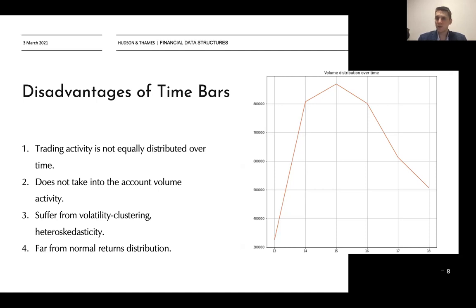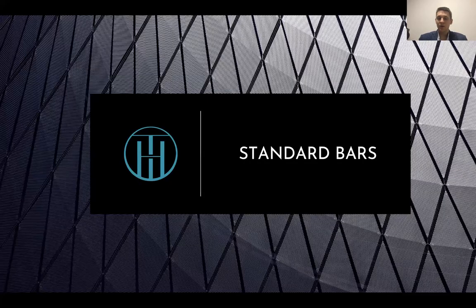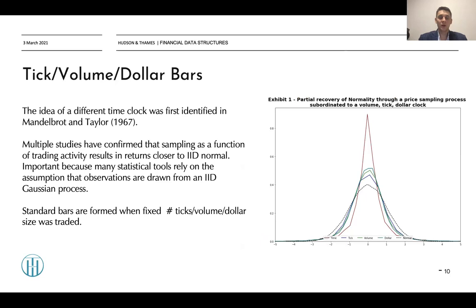To solve this issue, we can use so-called standard bars, divided into three categories: tick, volume, and dollar bars. The idea of a different time clock was first identified in the Mandelbrot and Taylor paper in 1967. Multiple studies have confirmed that sampling as a function of trading activity results in returns closer to independent and identically distributed, or IID — which is extremely important because many statistical tools rely on the assumption that observations are drawn from an IID, especially a Gaussian, process.